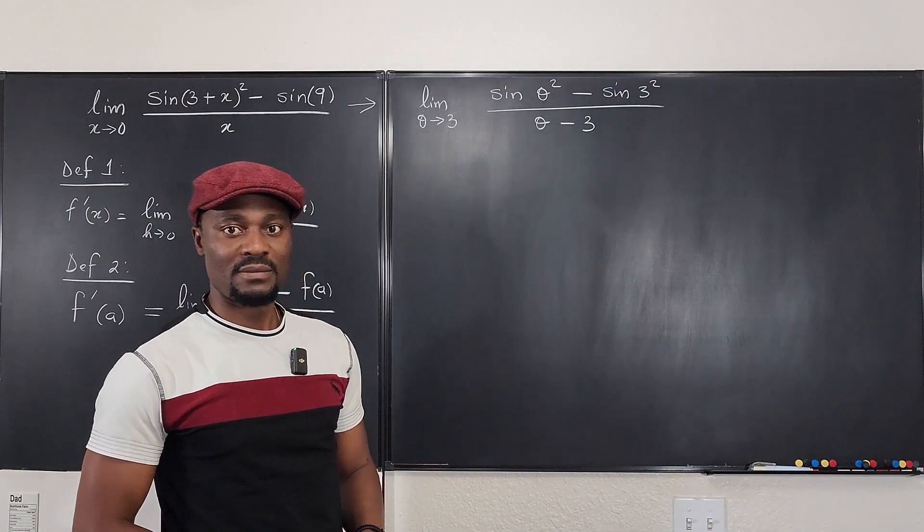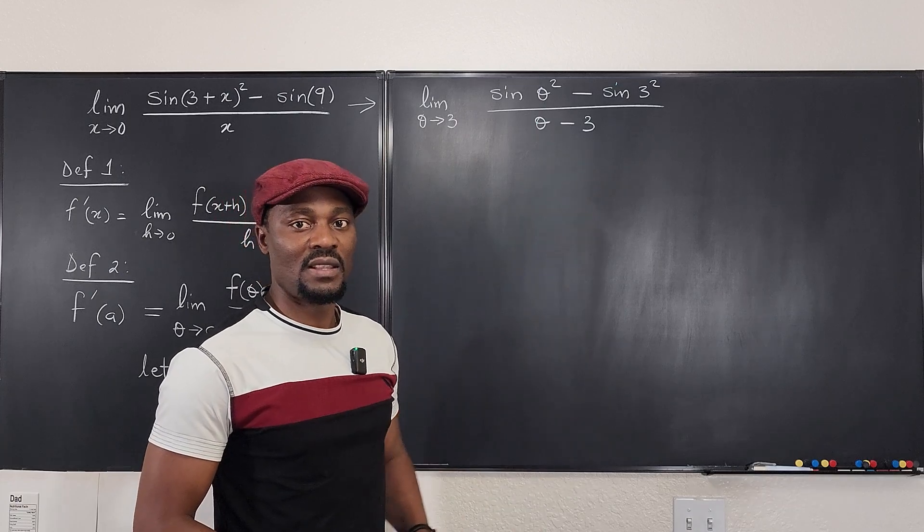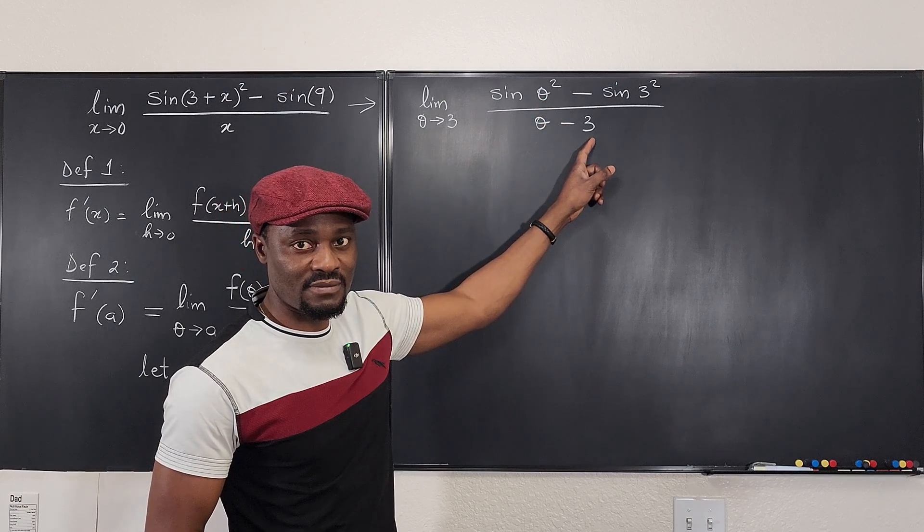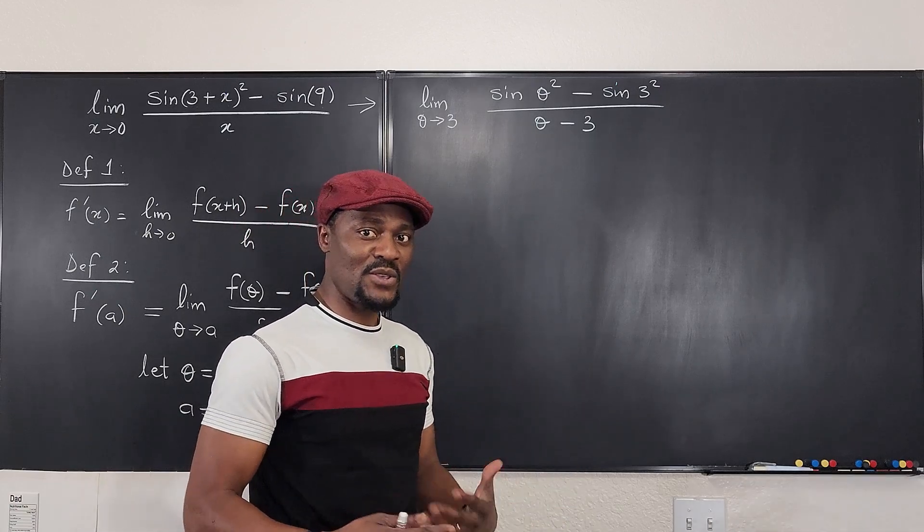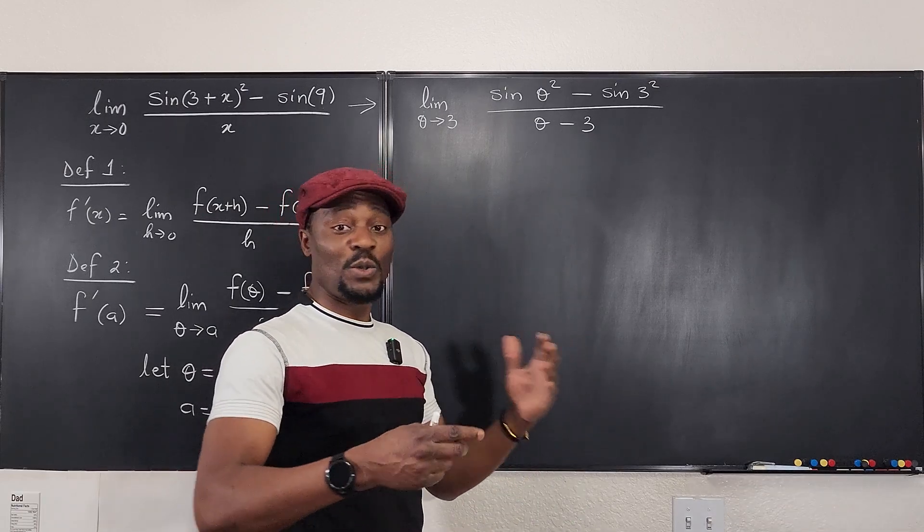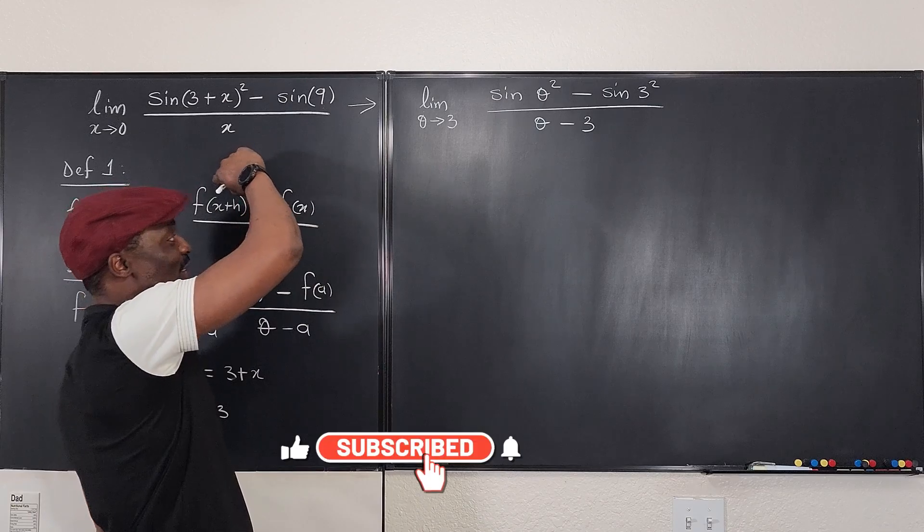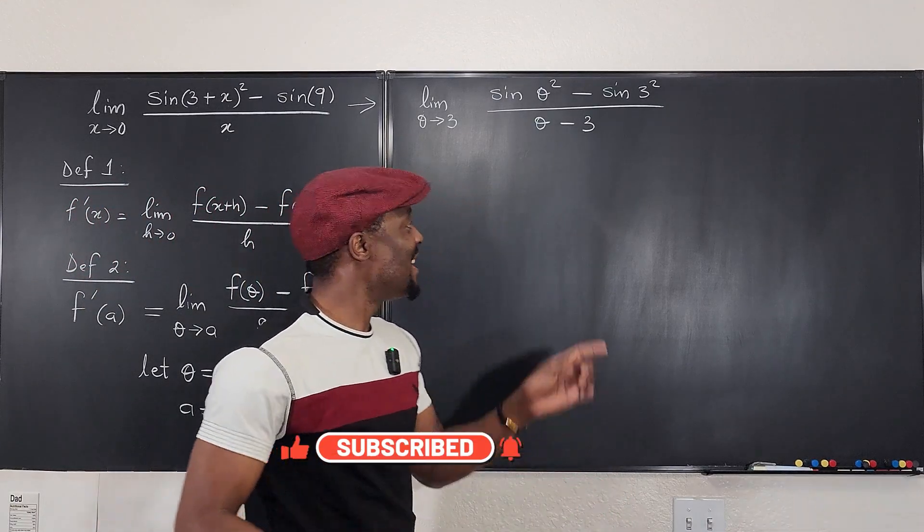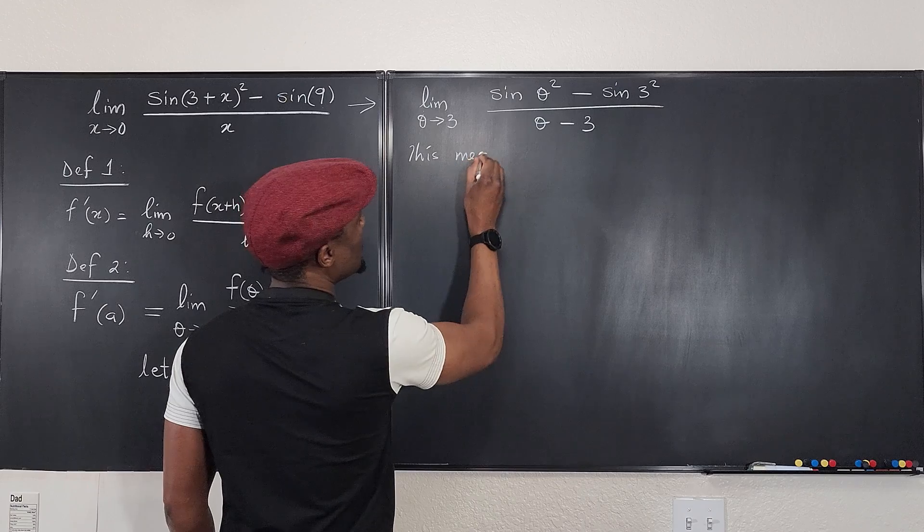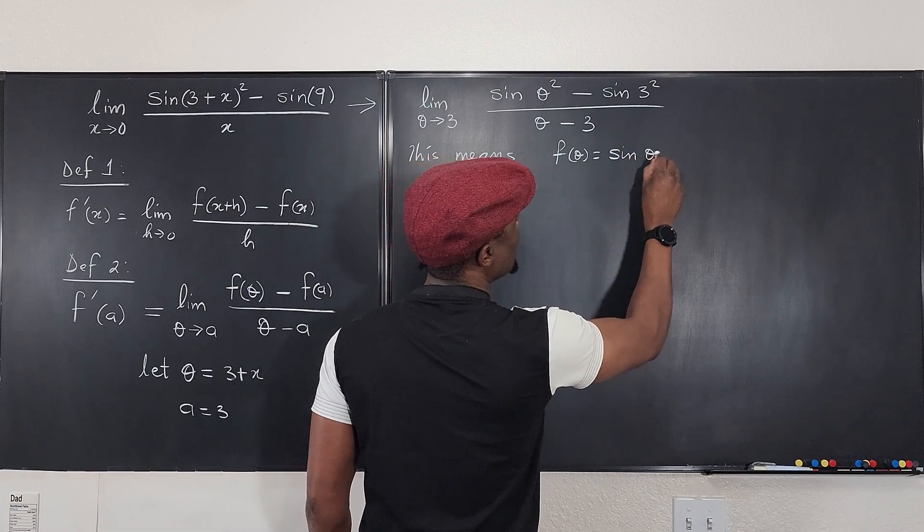So what does this mean? This means find the derivative of this function and plug in 3 after you get the derivative. Find the derivative of this function and plug in 3 when you're done. Now, can we just take the derivative by using the chain rule? Well, if you haven't learned how to use the chain rule because you've not been taught all the differentiation techniques, then it means you have to use the definition of the derivative, the first definition, to first find the derivative and then plug in 3 at the end of the day. So this implies